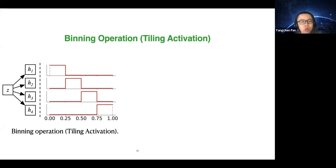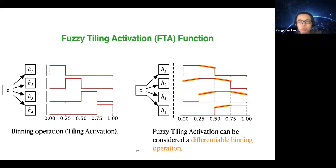Here is a visualization of the binning operation — in our published work we call it the tiding operation because tiding is more general. The binning has four outputs: it maps a scalar of 0.3 to a four-dimensional output. The right-hand side shows the activation I'm about to introduce — it's called the Fuzzy Tiding Activation, which can be considered as a differentiable binning operation. In the highlighted region there is a slope, enabling backpropagation with non-zero gradients.